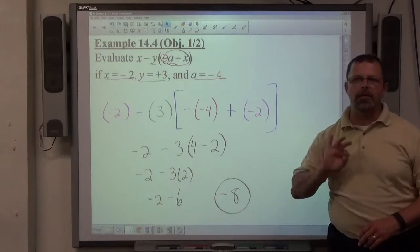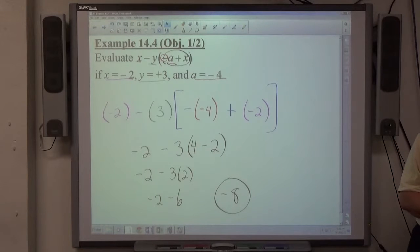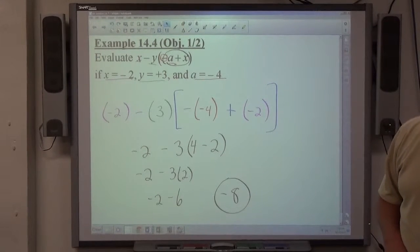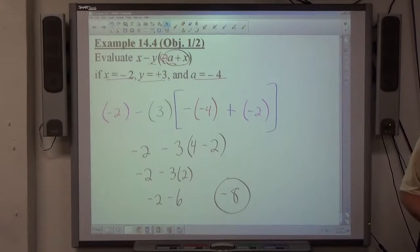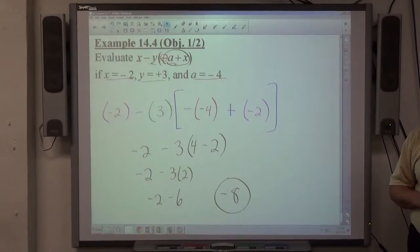When you get to the addition step again, the bigger number always determines the sign of the answer. It is not 2 negatives make it positive for addition subtraction. Bigger number determines the sign for addition subtraction.